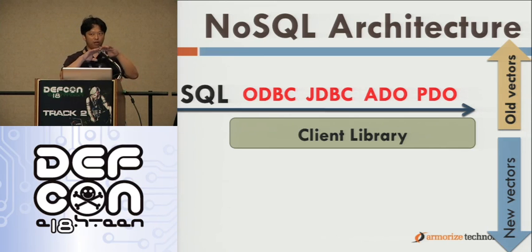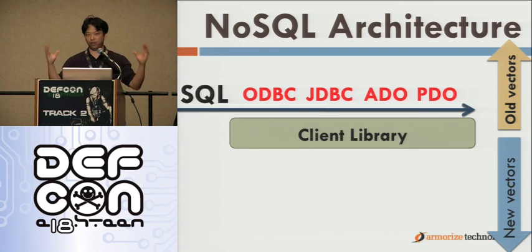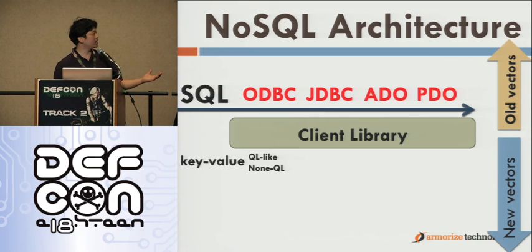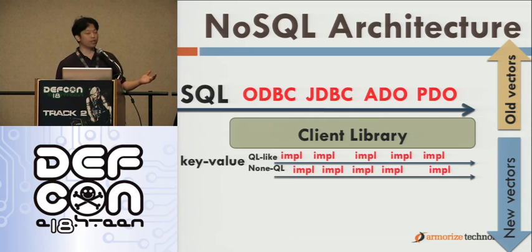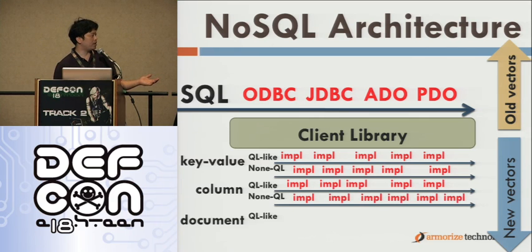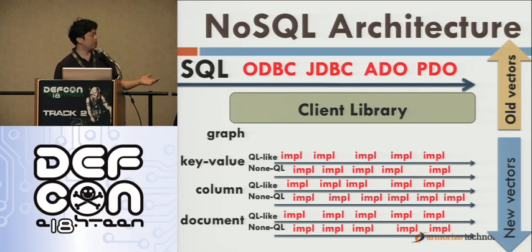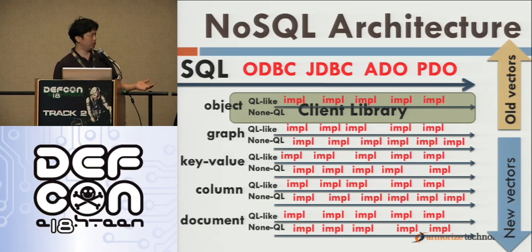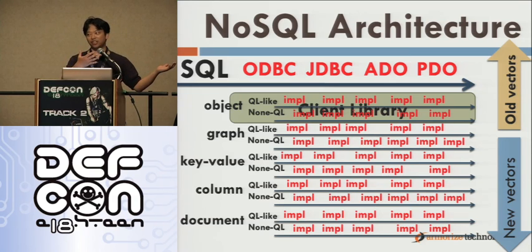Now, we have key-value-based databases, and they may implement at least two versions of their client libraries — the QL-like and the non-QL-like — with many different implementations. The same thing applies to column-based, document-based, graph-based, and object-based NoSQL databases. This is the landscape as we see it today.